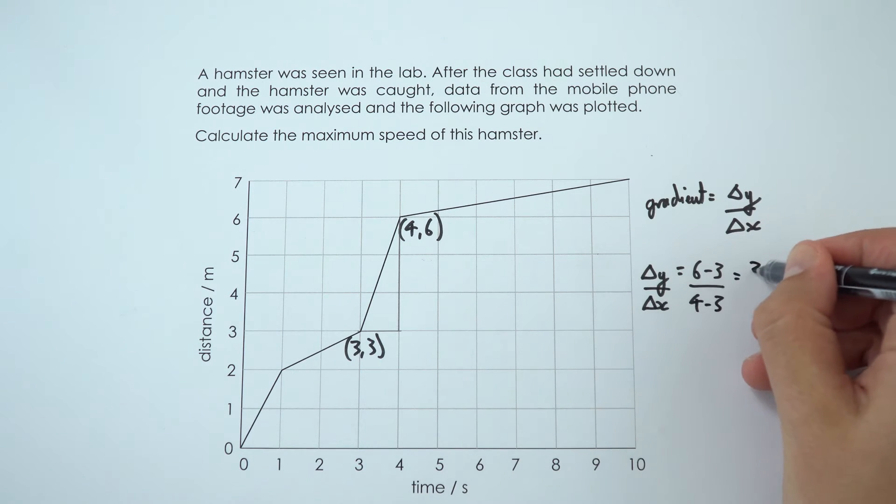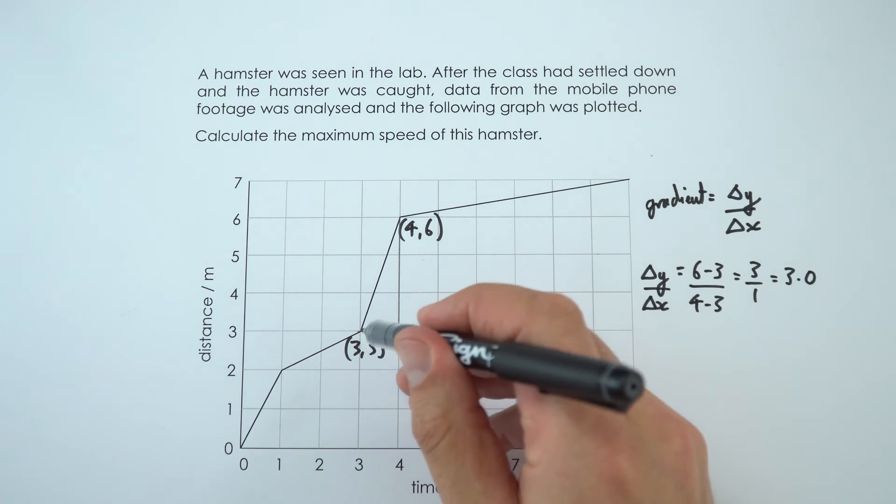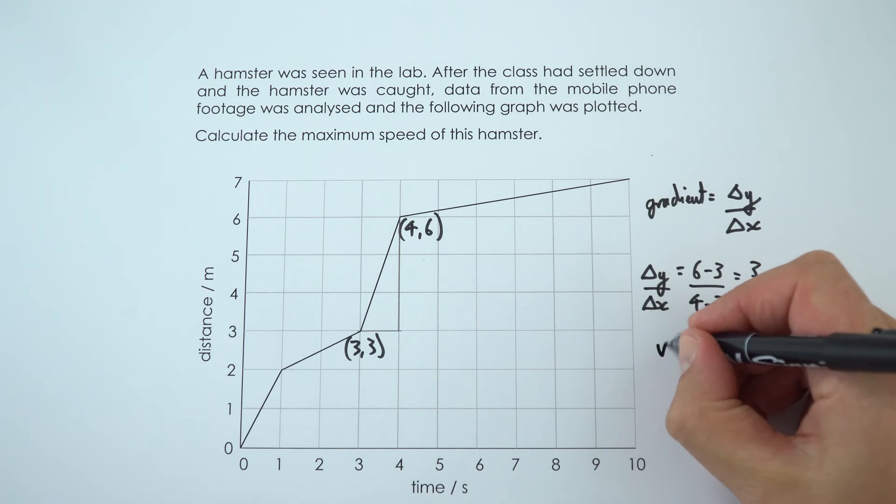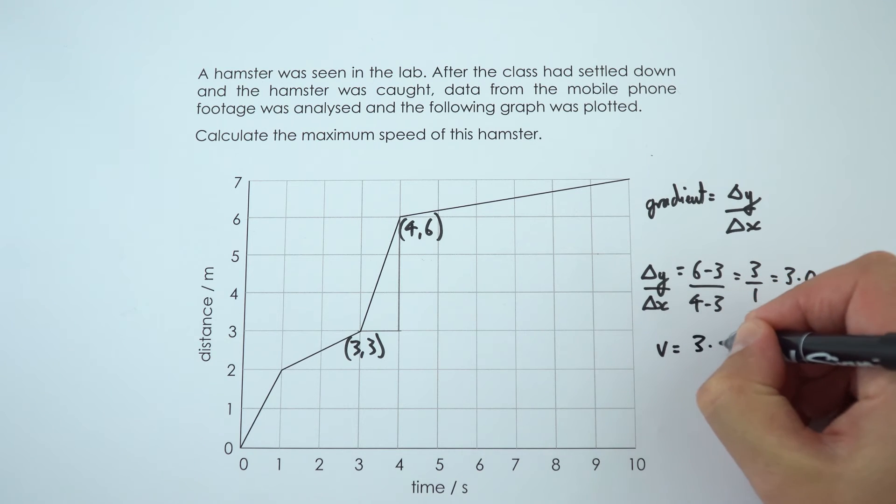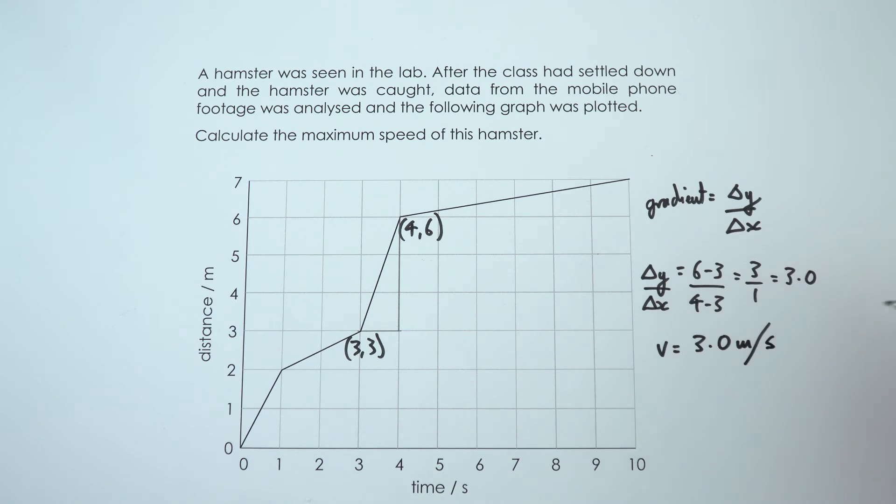So that's equal to 3 divided by 1, which is equal to 3.0. And I can say that this is 3.0 because of the way that I can read my graph over here. So in this case, the maximum speed of that hamster moving pretty quickly is equal to 3.0 metres per second.